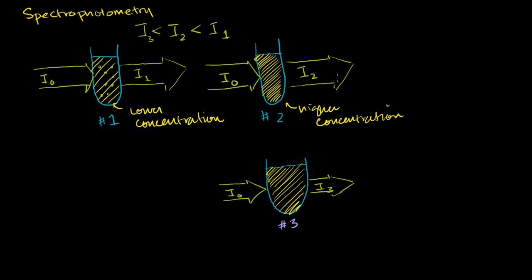If you were looking at these — this has the least light, this has a little bit more light being transmitted, and this has the most light being transmitted. So if you placed your eyeball right here, this one right here would have the lightest color — you're getting the most light into your eye. This would be a slightly darker color, and this would be the darkest color. That makes complete sense: if you dissolve a little bit of something in water, it'll still be pretty transparent; if you dissolve a lot, it'll be more opaque; and if the beaker gets even longer, it'll be even more opaque. So hopefully that gives you the intuition behind spectrophotometry. And the next question is: what is it even good for? Well, you could use this information — you could see how much light is transmitted versus how much you put in — to actually figure out the concentration of a solution. That's why we're talking about it in a chemistry context.